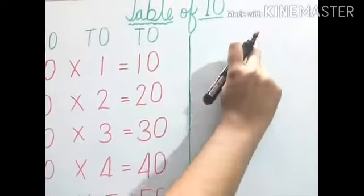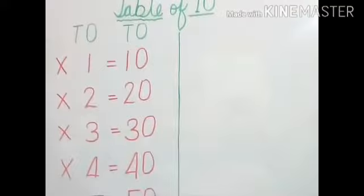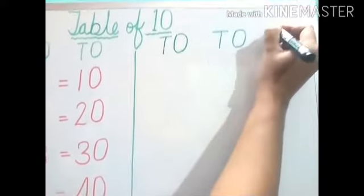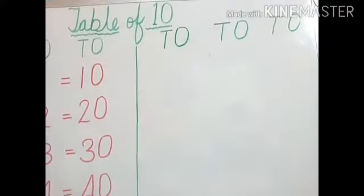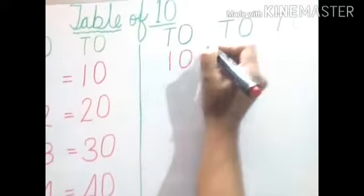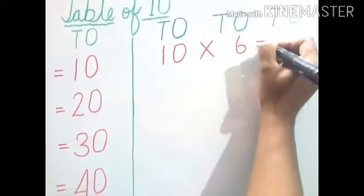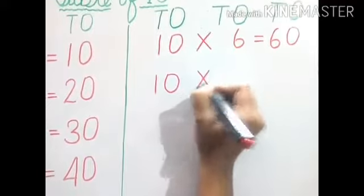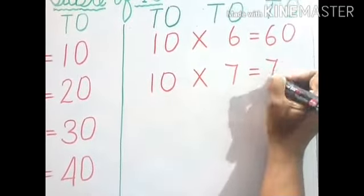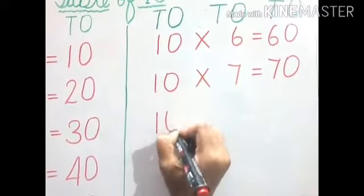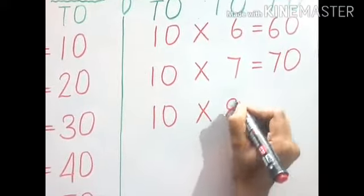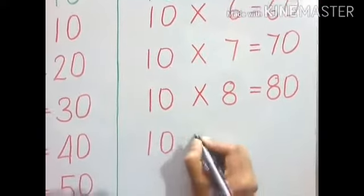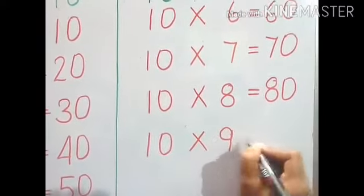Next, on the other side, I am going to write. First, we will write 10s once, 10s once, 10s once. Now: 10, 6s are 60. 10, 7s are 70. 10, 8s are 80. 10, 9s are 90.